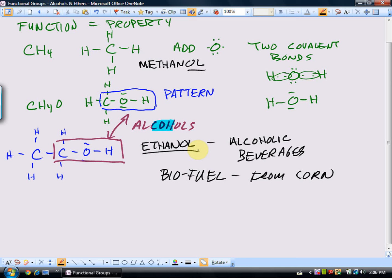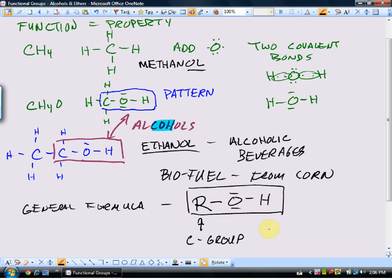To summarize, any molecule that contains that carbon-oxygen-hydrogen combination is an alcohol. We tend to show the general formula of an alcohol like this. We use R to represent any carbon group—that could be one carbon or many carbons. And that carbon group must be attached to an oxygen, which is then attached to a hydrogen. So there is the general formula for an alcohol.